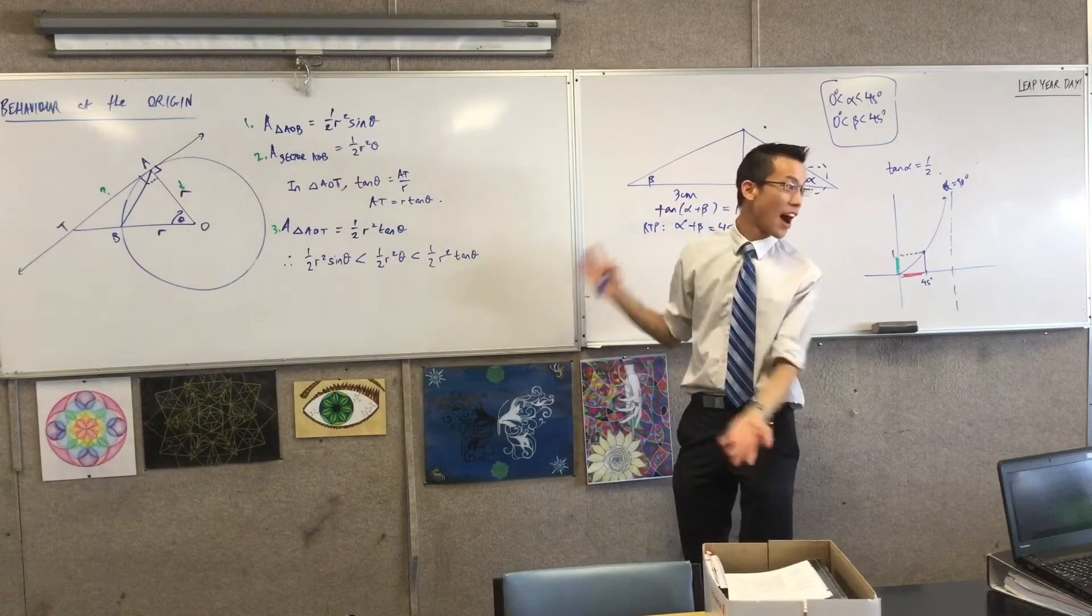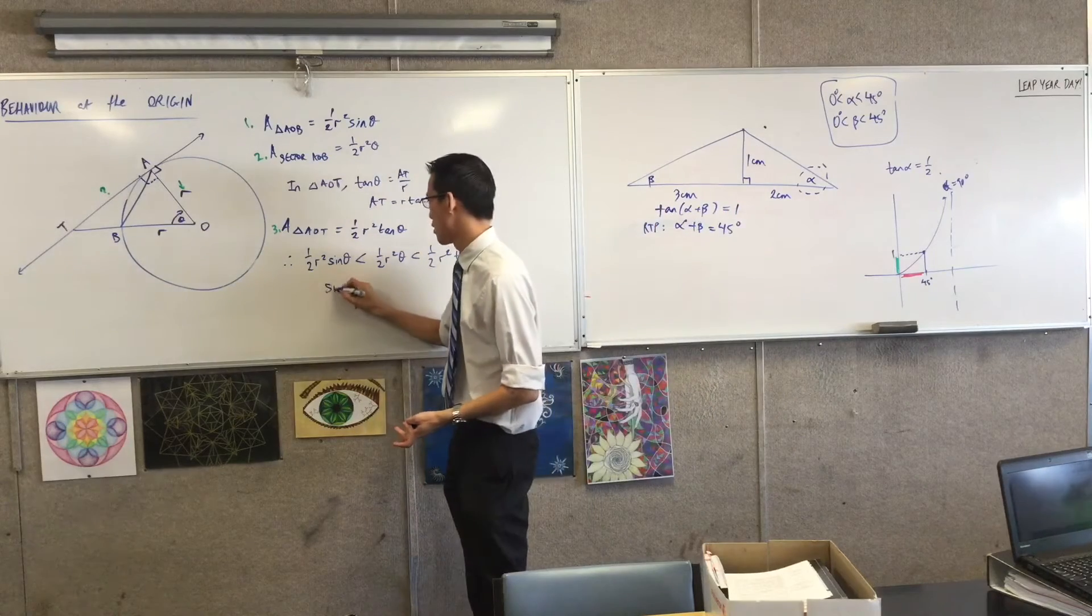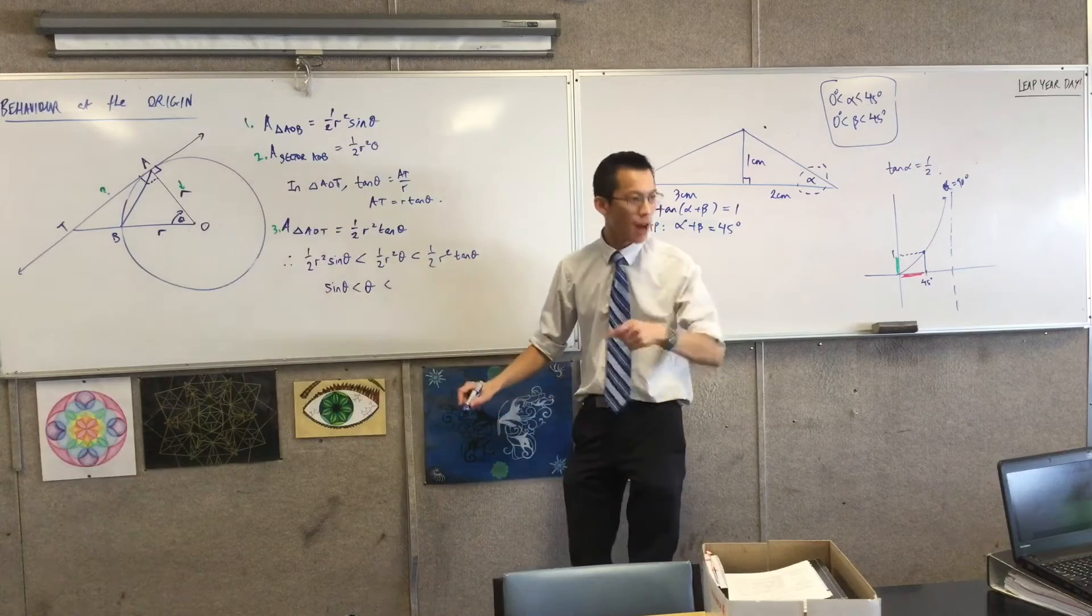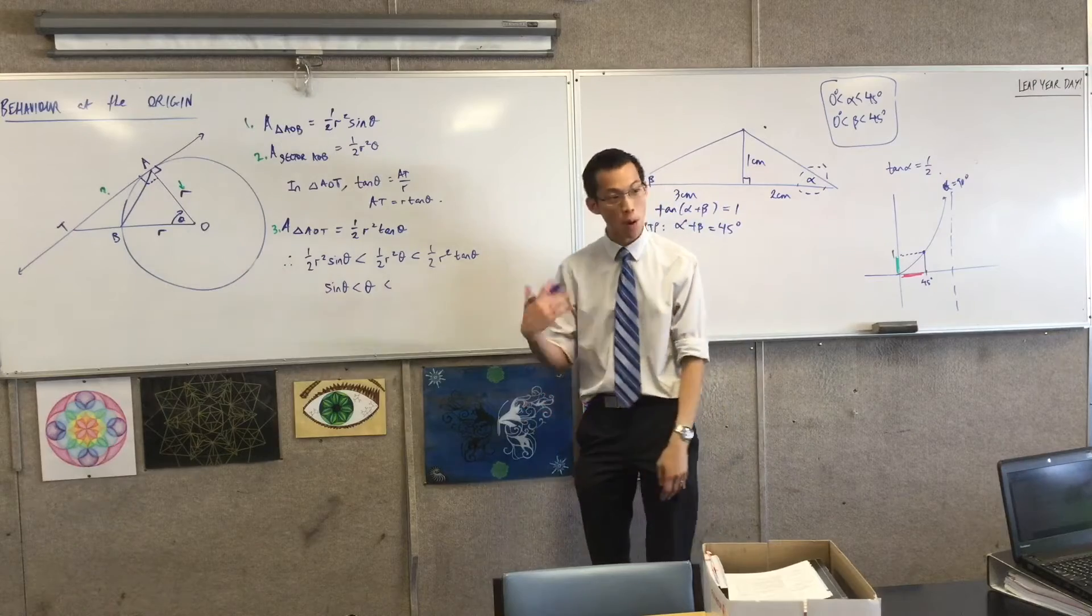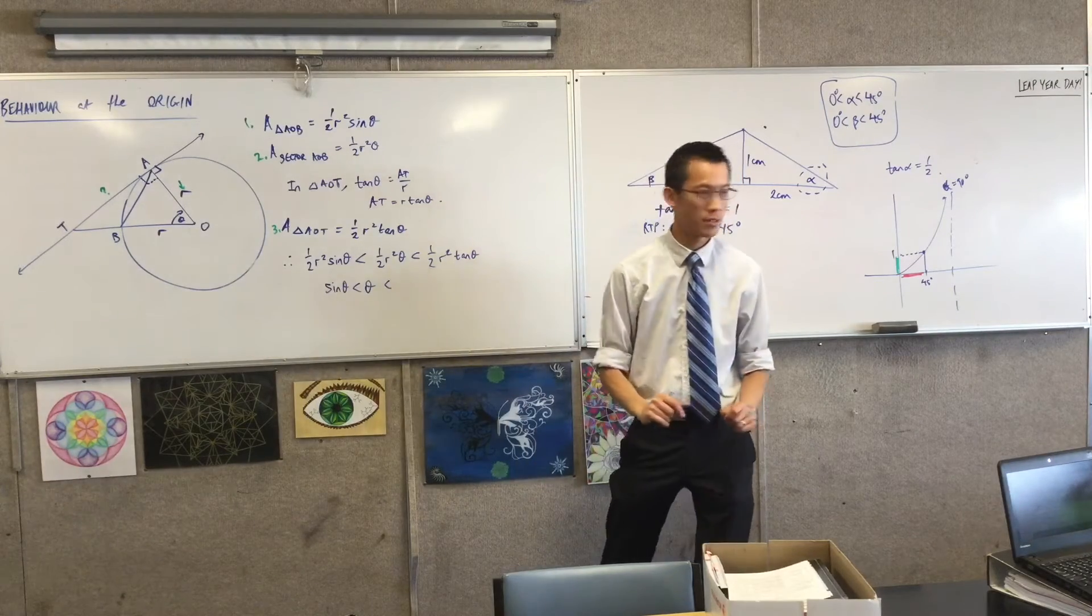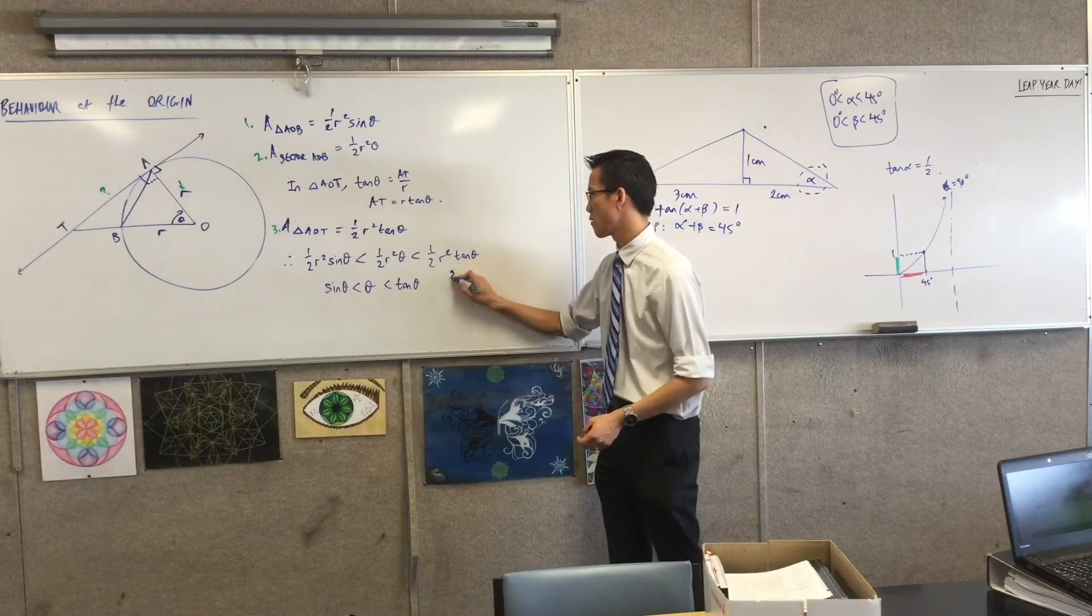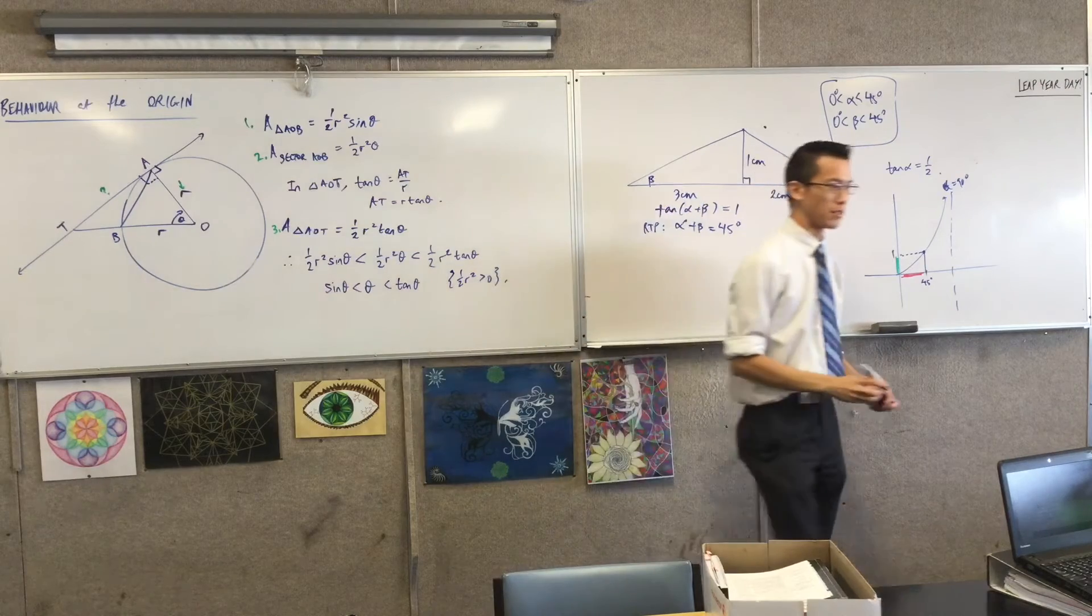I only need to do a couple of things to now try and get towards the origin to think about what happens when theta gets very small. Firstly, I want to get all these half R squareds out of the way. And I can simply divide through. Why can I do that? Because half R squared is, well, so long as it's not zero I can divide through, and so long as it's positive, which it had better be, it's not going to muck around with my inequality signs.